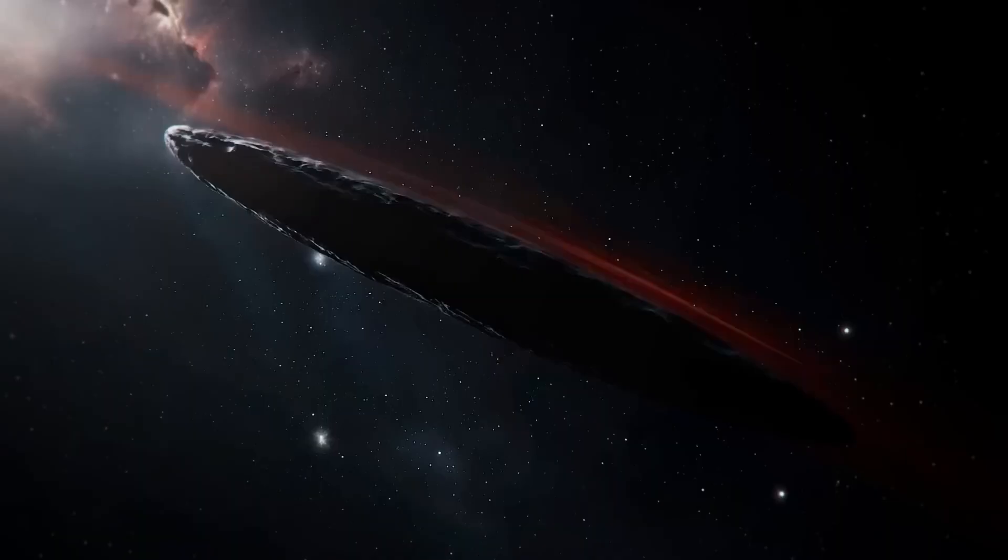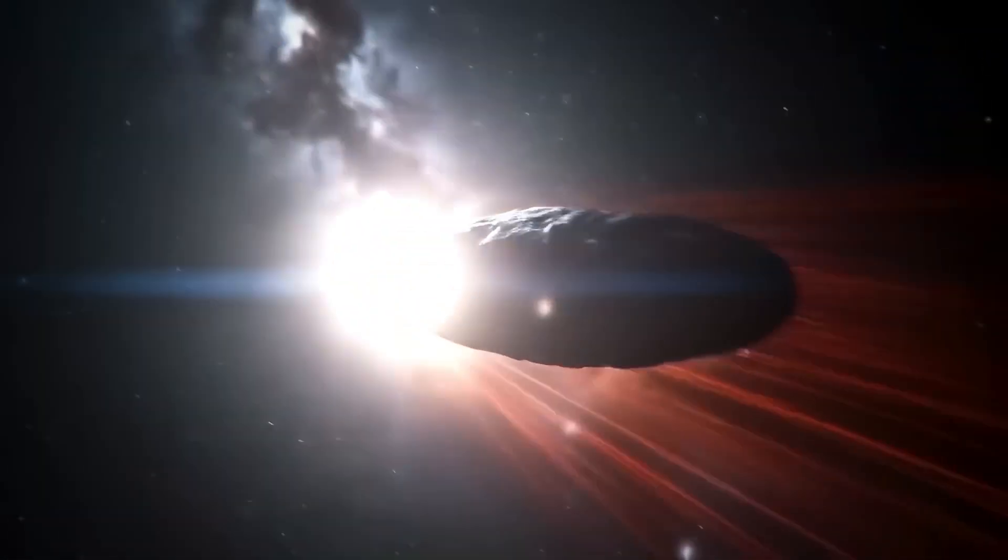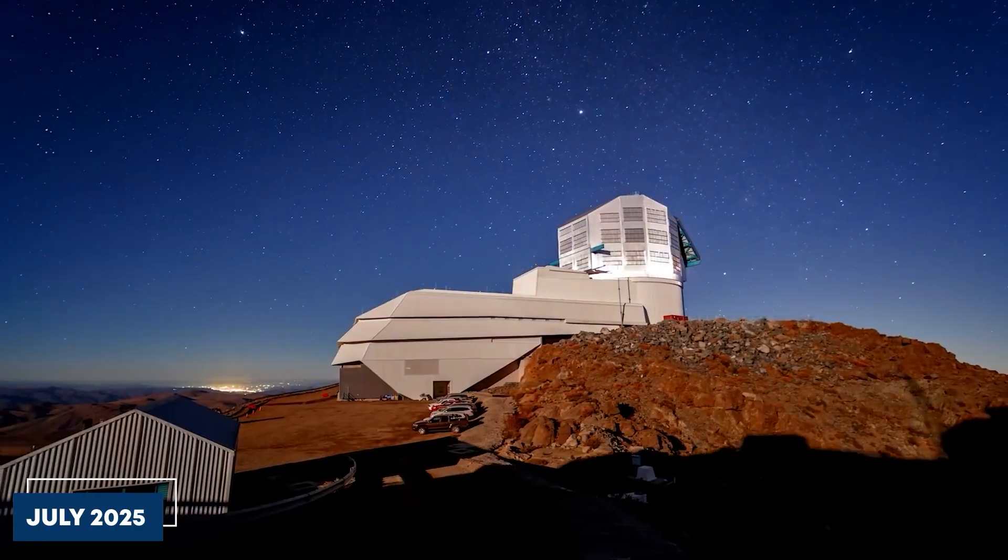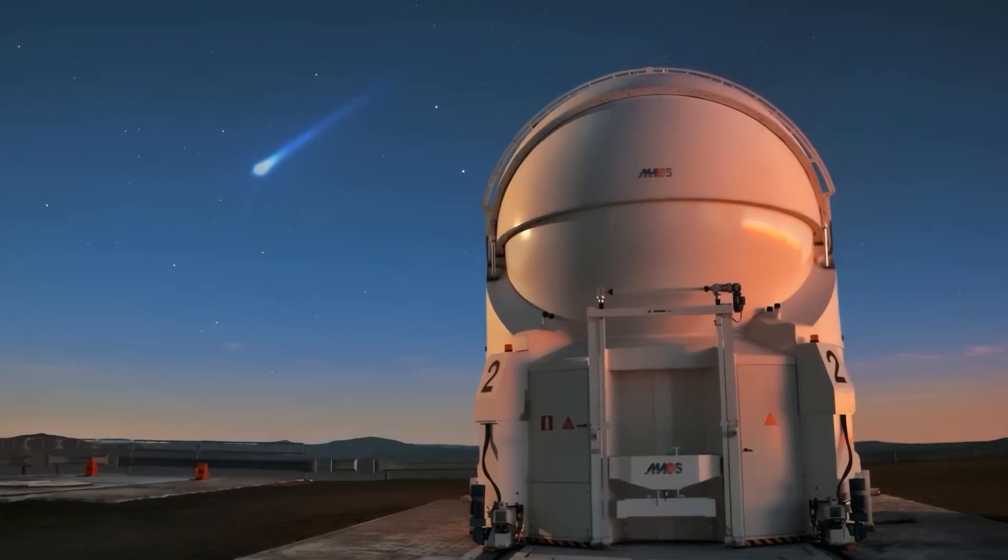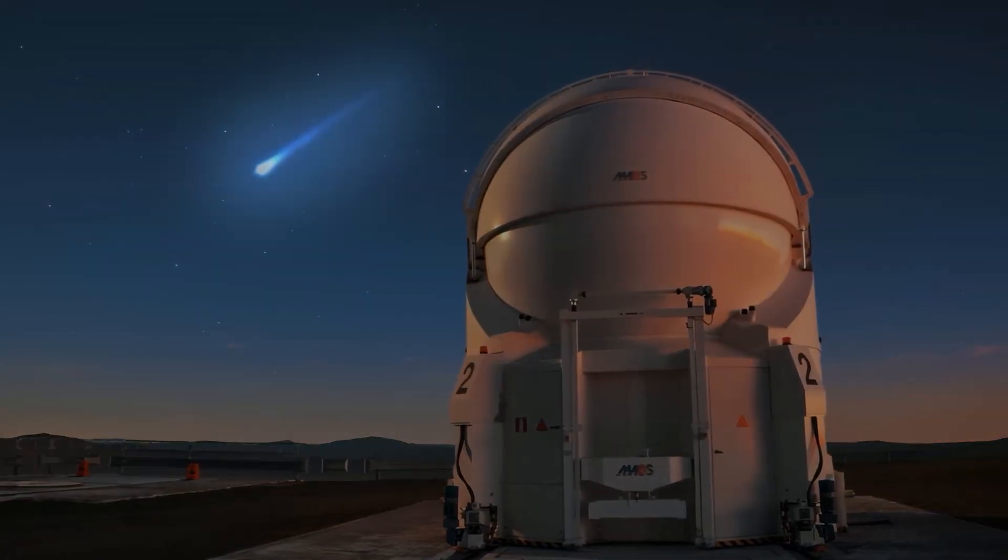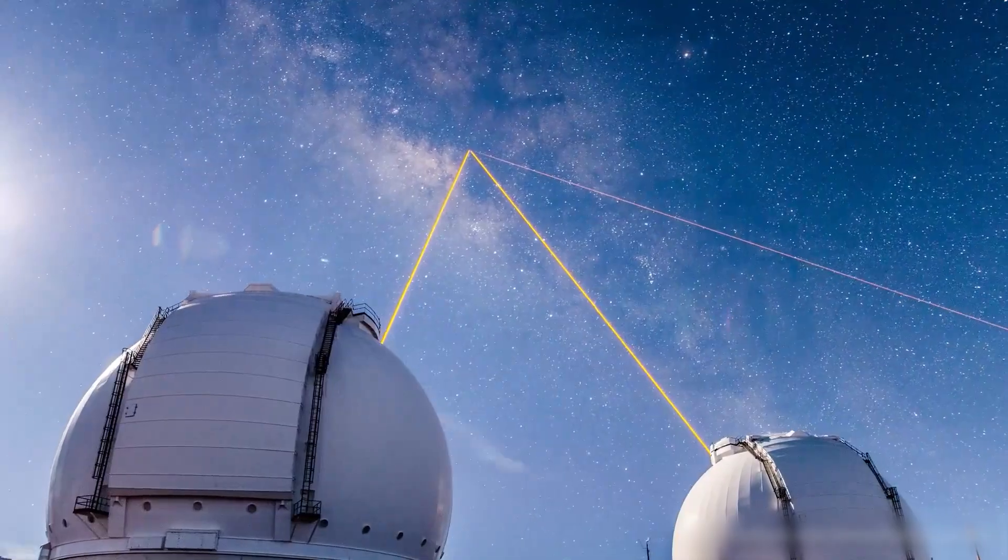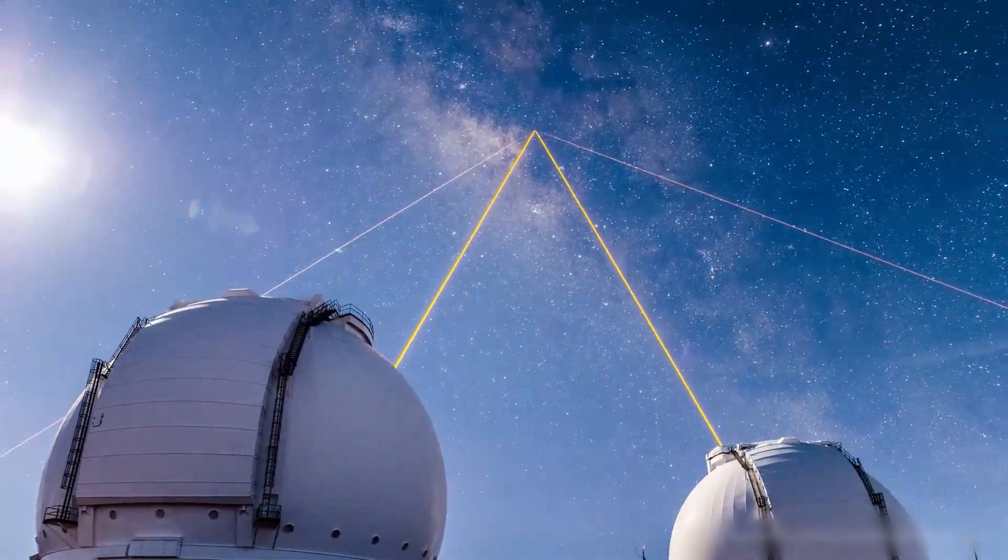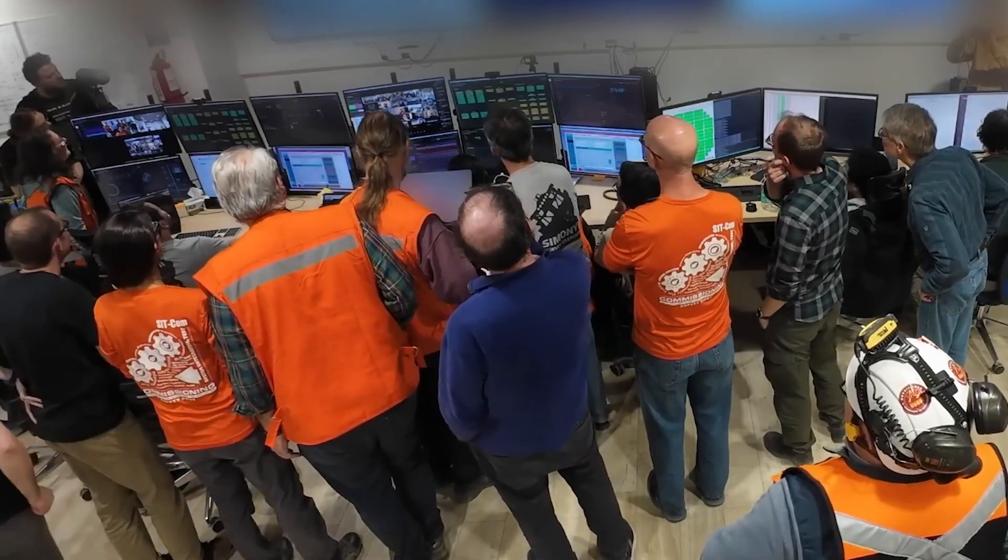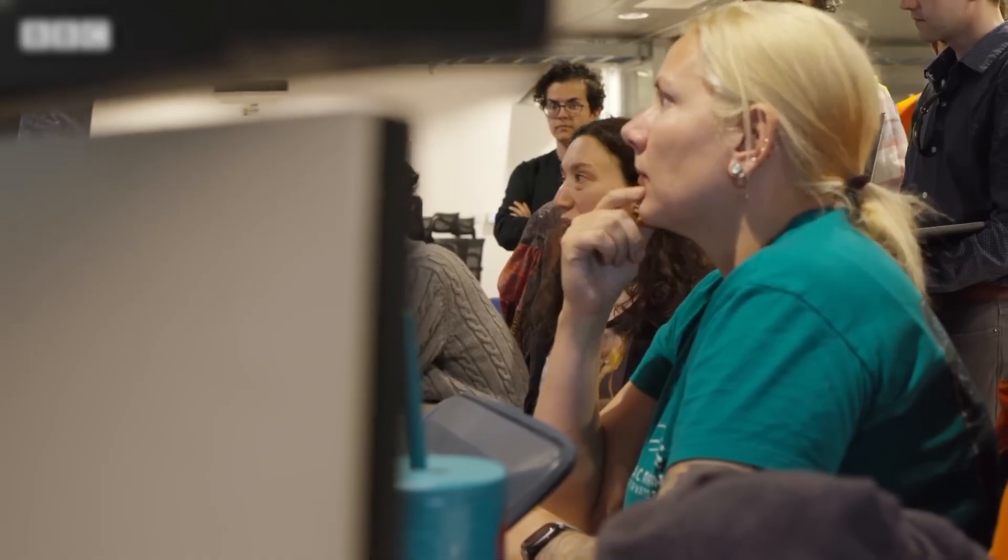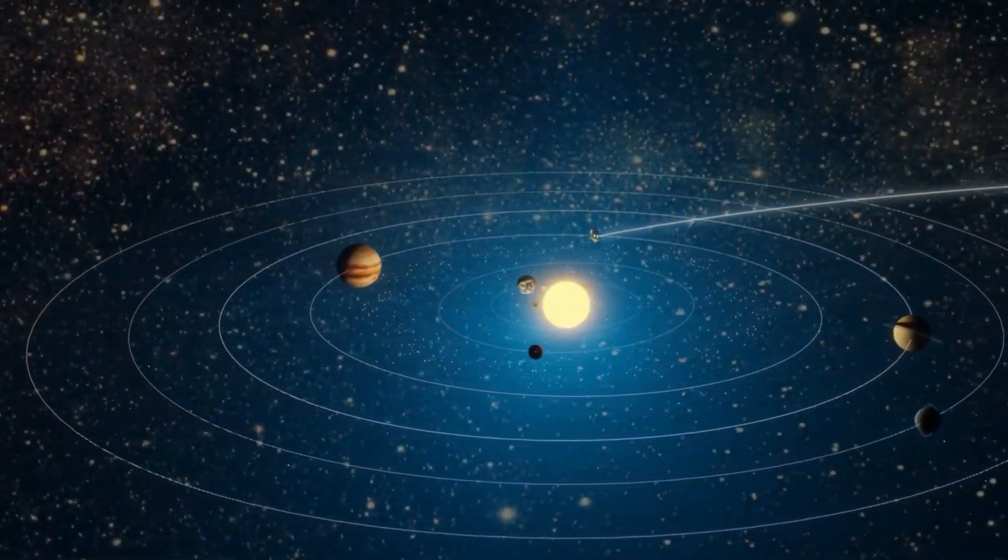But first, let me show you exactly what we're dealing with. Back in July 2025, the Atlas telescope system picked up what appeared to be a routine space rock. Nothing special, right? Wrong. As astronomers calculated its path, they realized something incredible. This object didn't belong to our solar system.